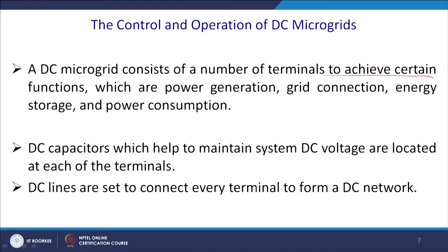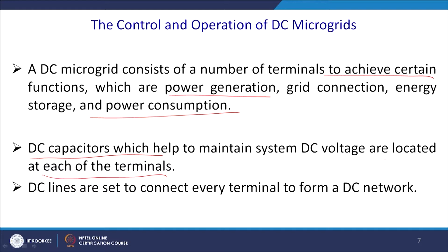A DC microgrid consists of a number of terminals to achieve certain functions: power generation, grid connection, energy storage, and power consumption. The DC capacitors, which help maintain the system voltage, are located at each of the terminals. The DC lines connect every terminal to form the DC network.